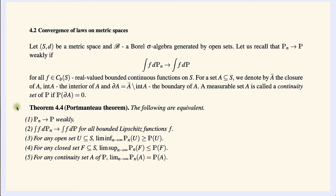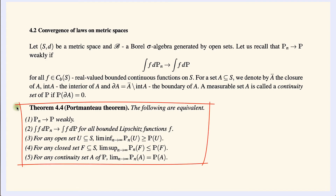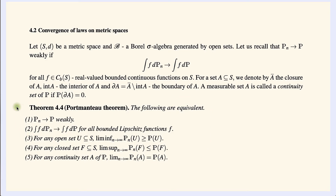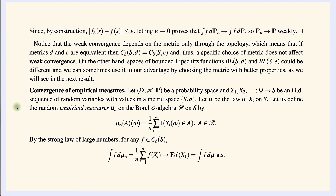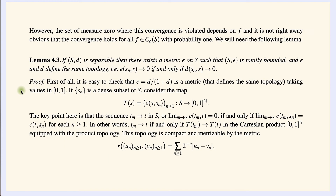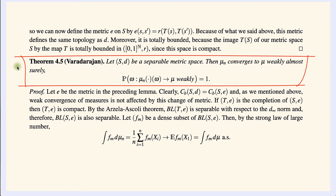Section 4.2 starts with the Portmanteau theorem, which collects several conditions equivalent to weak convergence of probability measures. After proving this, we give a quick application to convergence of empirical measures, stated in Varadarajan's theorem. In the next video we will go over this section in more detail; for now I want to focus on the main content of this section.